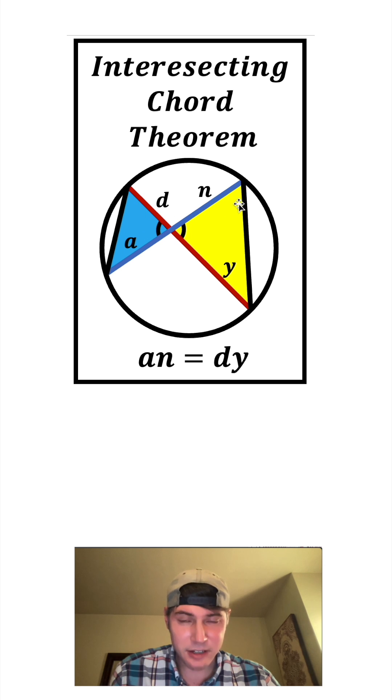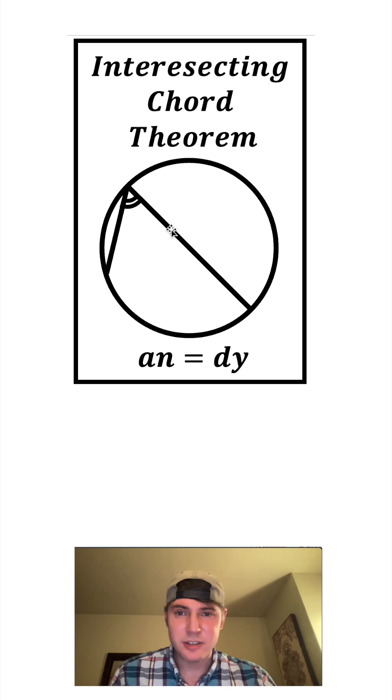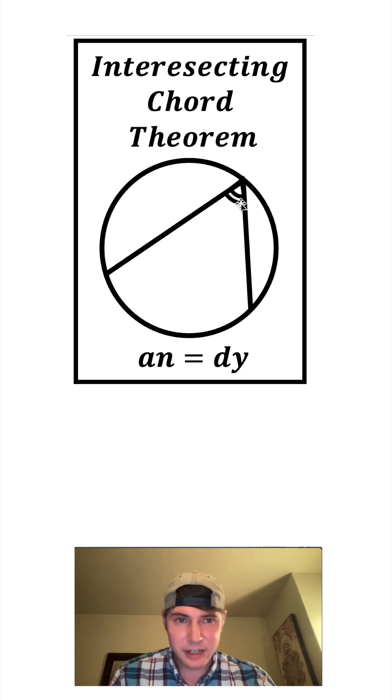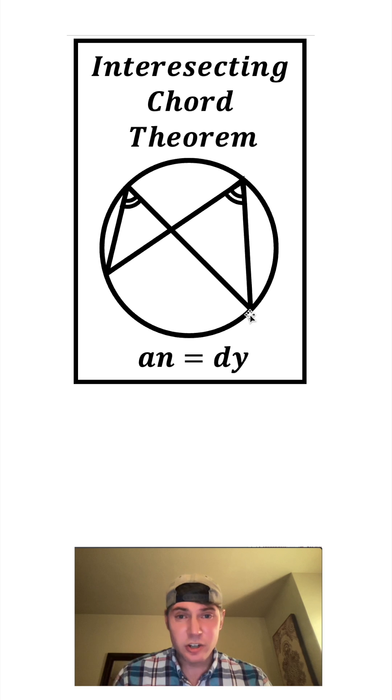And then this angle in the blue triangle and this angle in the yellow triangle are also congruent because these are inscribed angles. This angle right here subtends this arc and this angle right here subtends the same arc. In a circle, anytime you have two angles that subtend the same arc, they're congruent to each other.